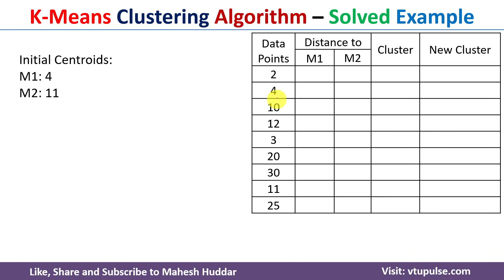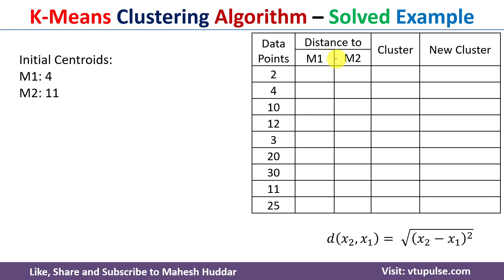This is how I will represent the data — these are the data points given to us. We have to calculate the distance from each data point to the two cluster centroids, m1 and m2, and then assign each point to a cluster. The two centroids are m1 = 4 and m2 = 11. We will use Euclidean distance to calculate these distances.